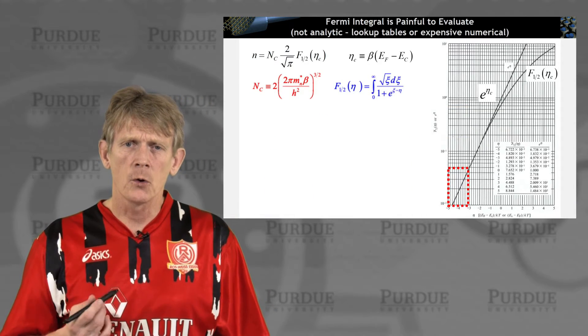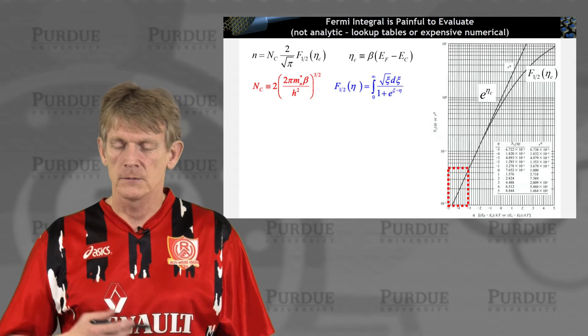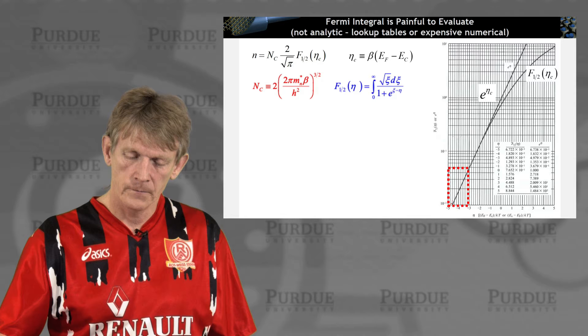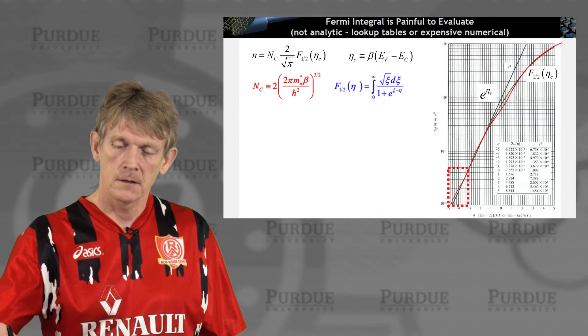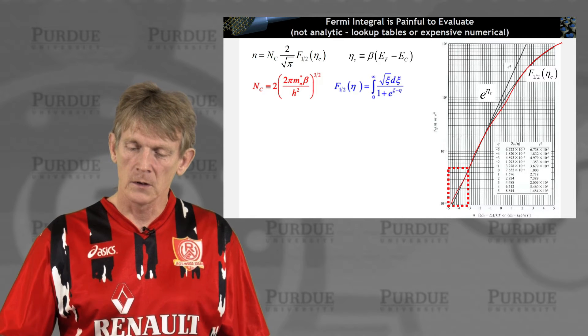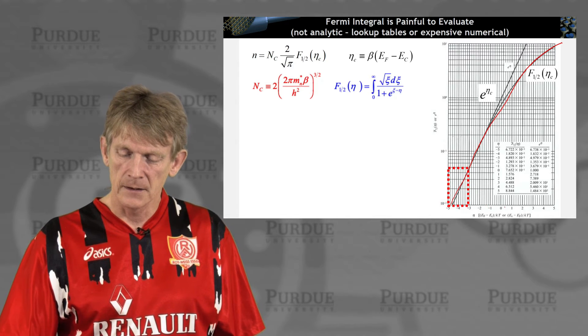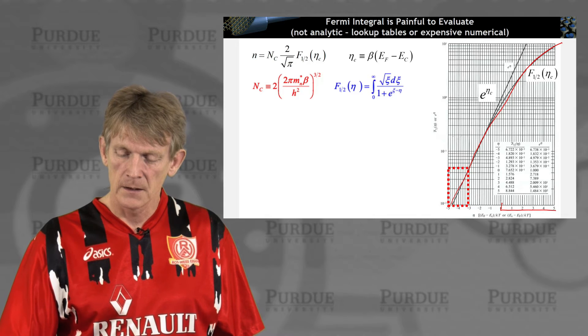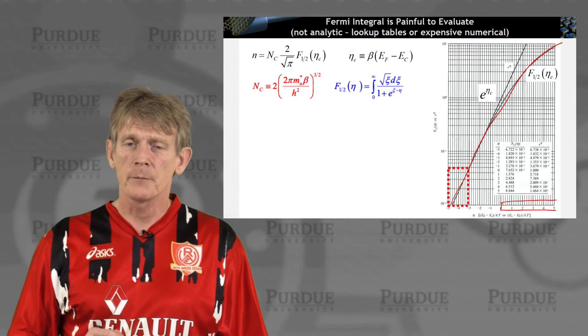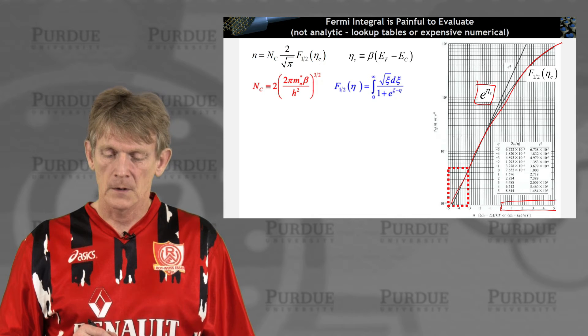Beta is 1 over kbt. So this is somewhat of a beast to deal with here, this Fermi integral of type 1 half. Alright. So in the olden days, what you would do is you would chart up and calculate this by hand calculation and tabulate this function. And you would plot it like this here. And on a log scale, as a function of eta here, it will be roughly linear for negative coefficients. And as eta is getting to be larger, it starts to taper off.